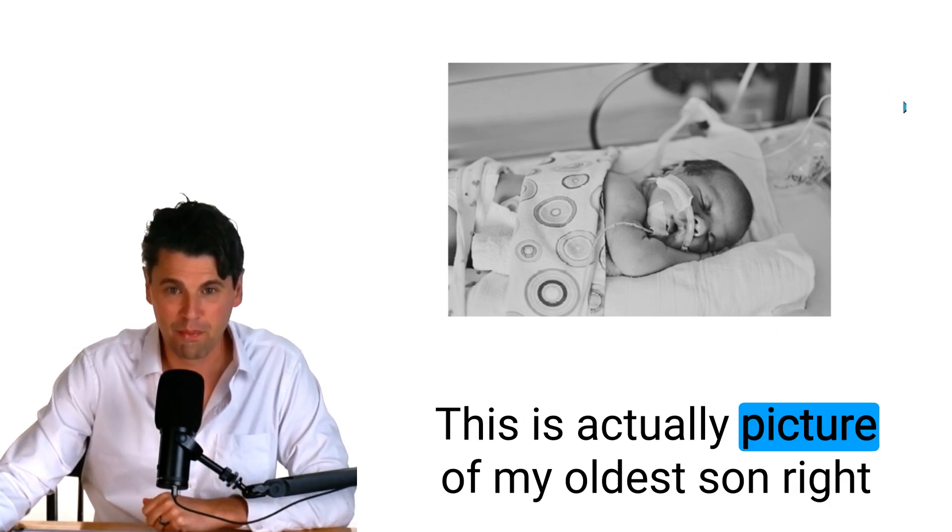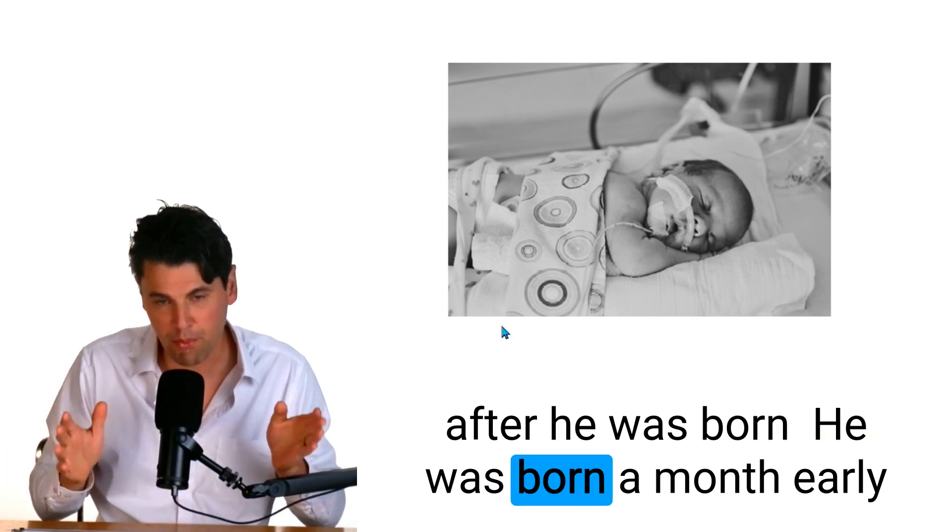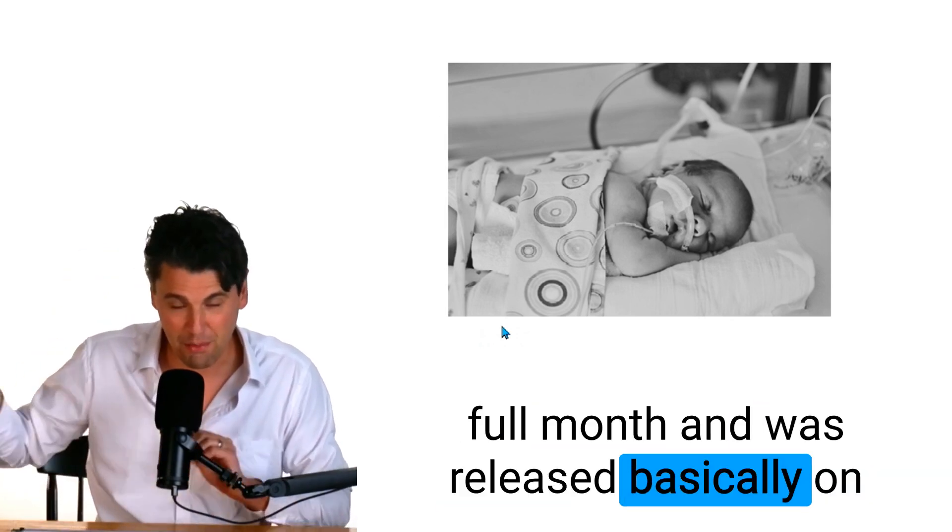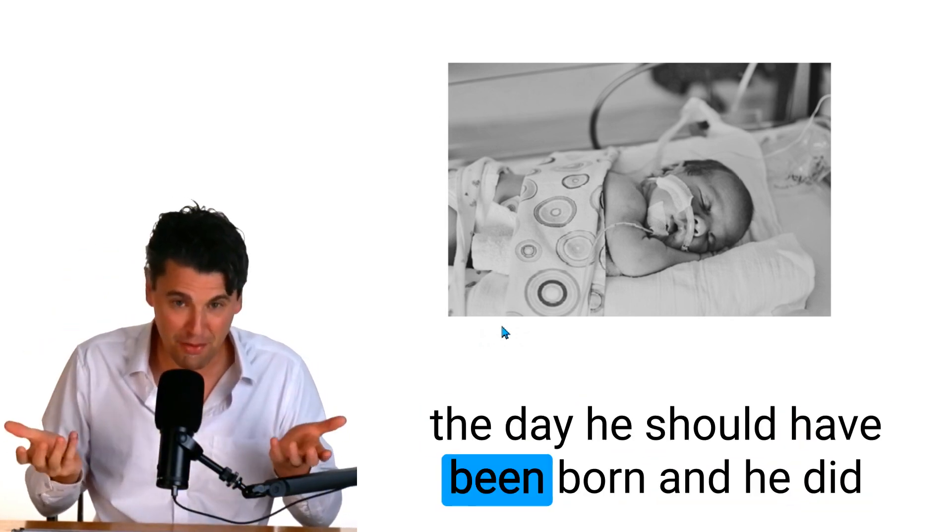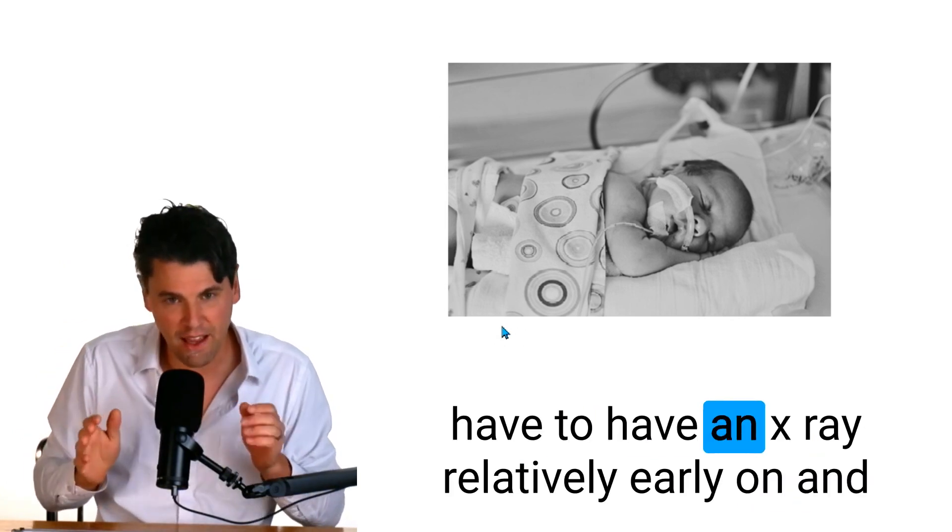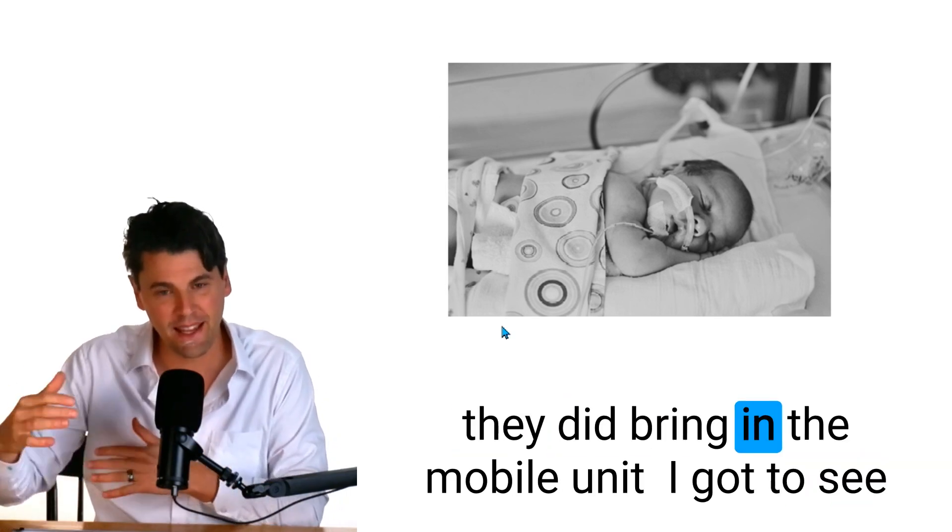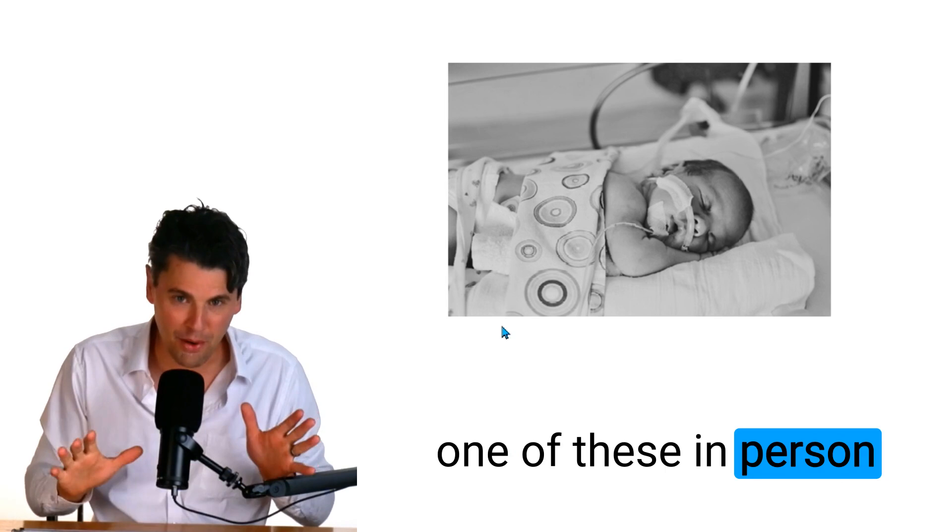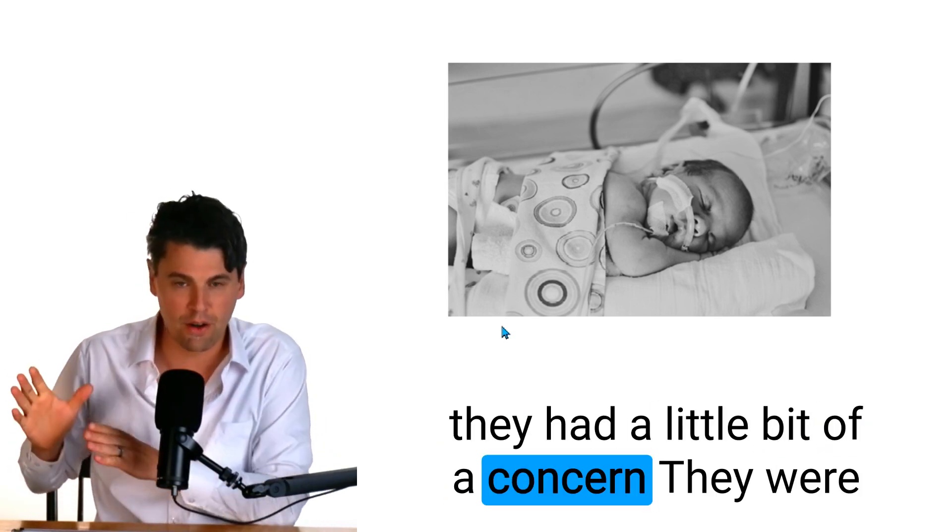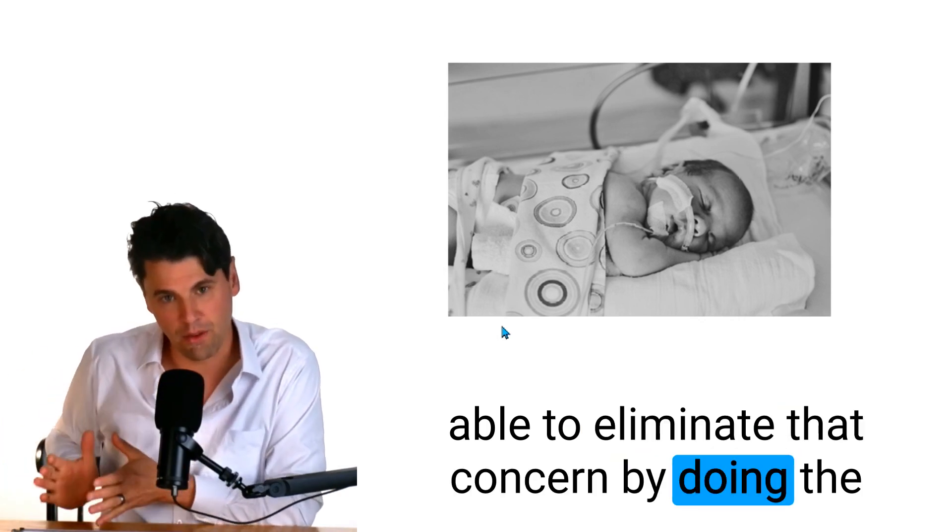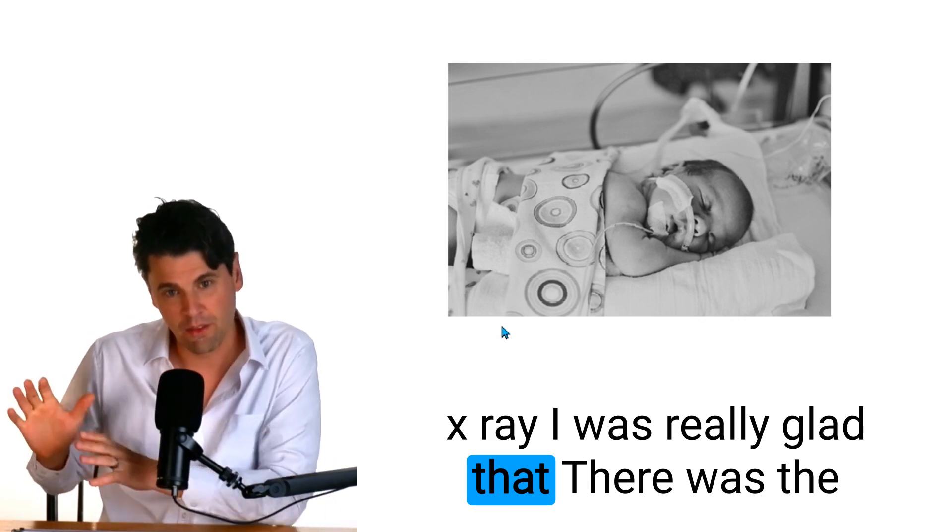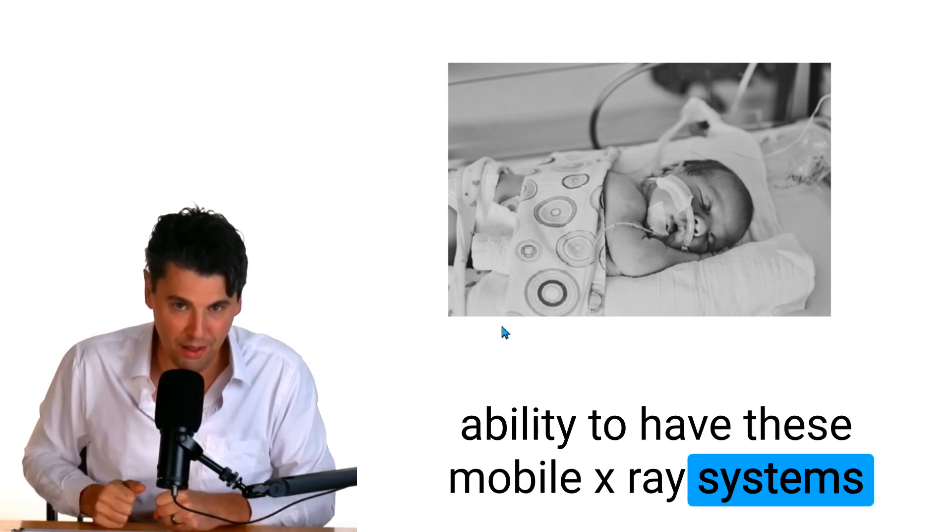This is actually a picture of my oldest son right after he was born. He was born a month early and he was in the NICU for the period of that full month and was released basically on the day he should have been born. And he did have to have an x-ray relatively early on and they did bring in the mobile unit. I got to see one of these in person. They had a little bit of a concern. They were able to eliminate that concern by doing the x-ray. I was really glad that there was the ability to have these mobile x-ray systems.